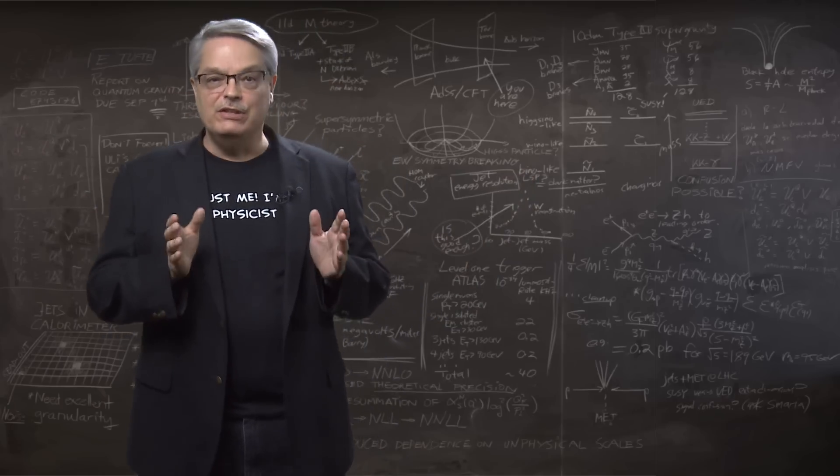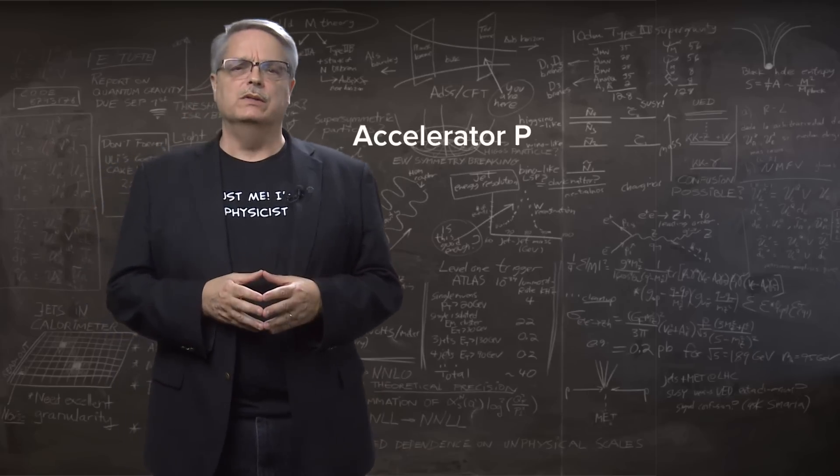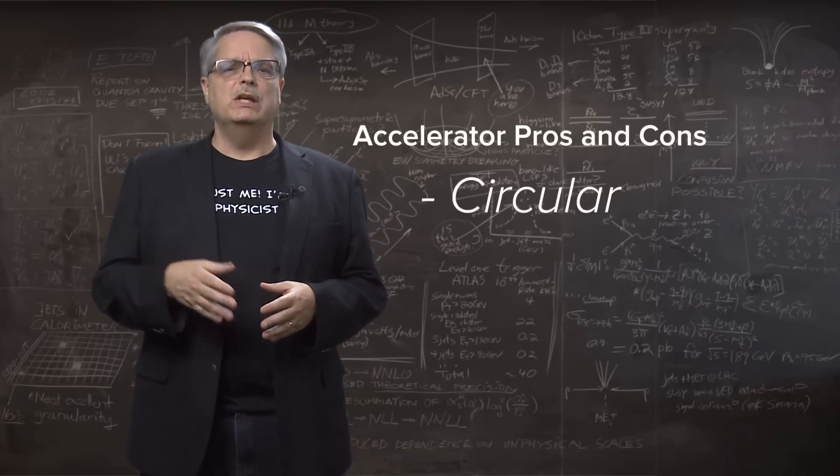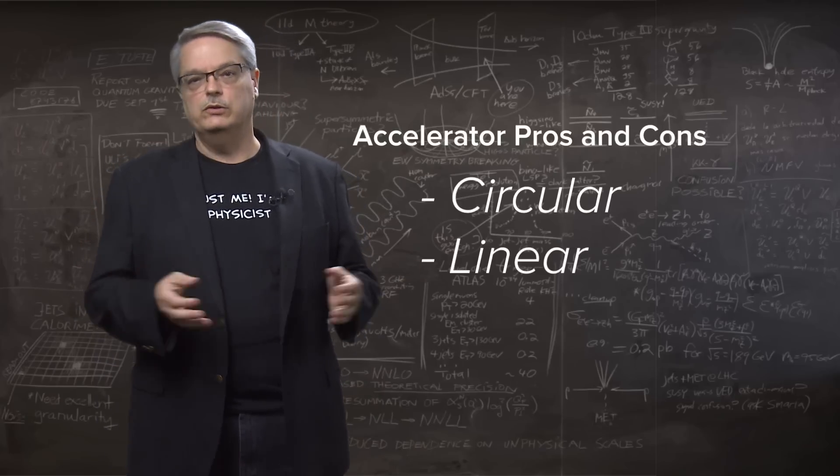There are lots of different shapes of particle accelerators, but when we're talking about cutting-edge research, there are two main ones. One of them is circular, and one of them is a straight line. So I thought I'd tell you about the pros and cons of the two different choices.